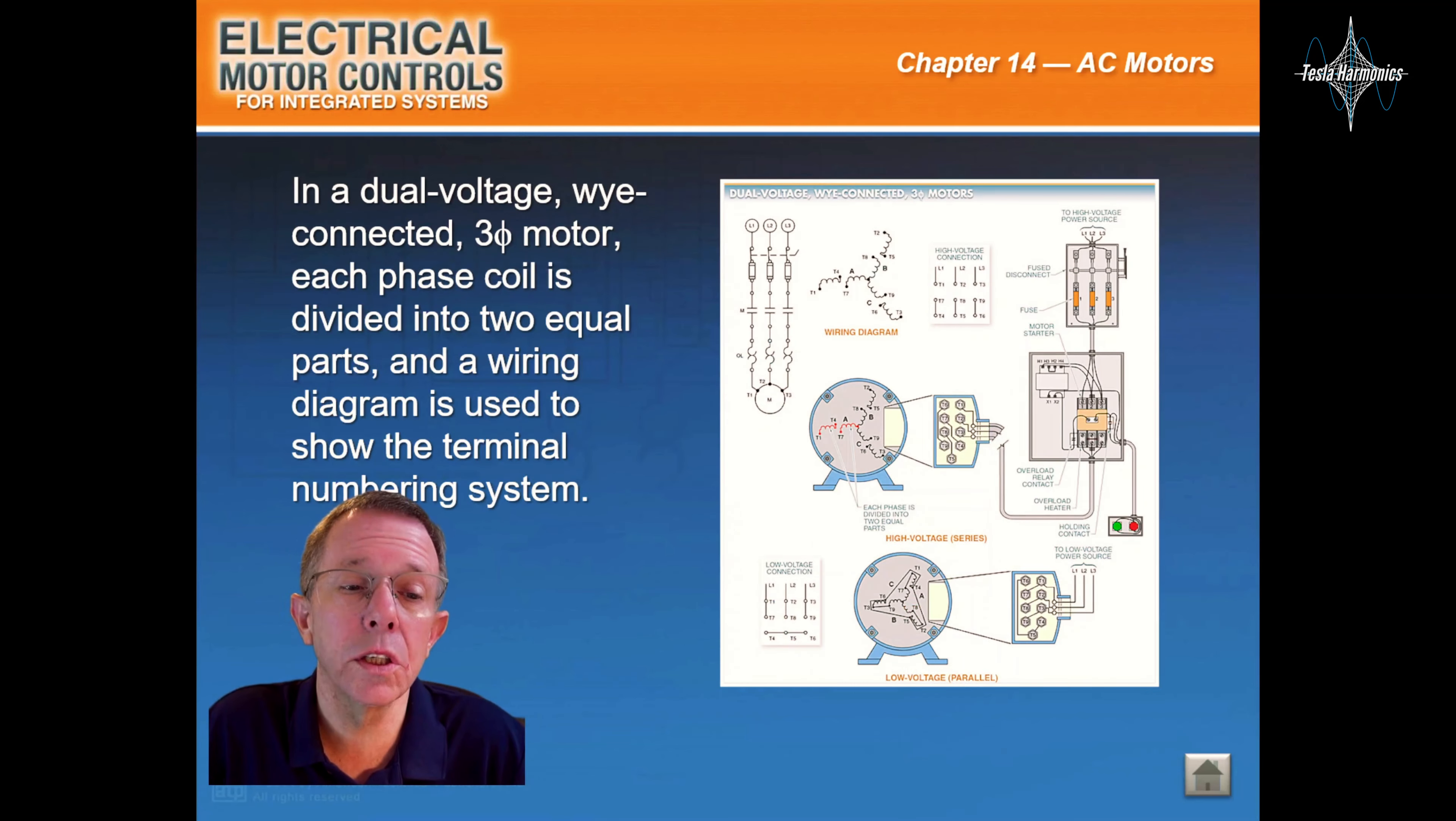In a dual voltage wye-connected three phase motor, each phase coil is divided into two equal parts and a winding diagram is used to show the terminal numbering system.